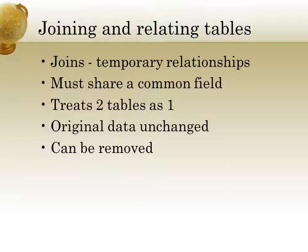First, we're going to talk about joining and relating tables. Joins are temporary relationships. You've got two tables, two data sets, two attribute tables. In order to take the information from one and join it to the other, you have to have a common field. Once you have that common field to align information in table A with information in table B, it treats the two tables as one. The original data is unchanged, and with a few clicks of the mouse, you can remove joins.